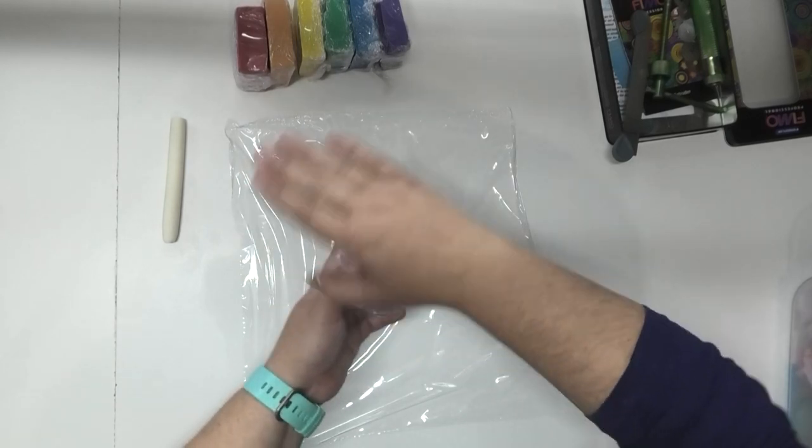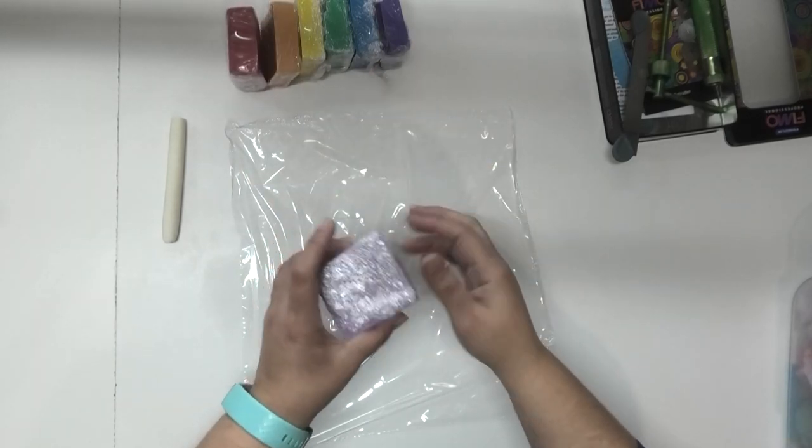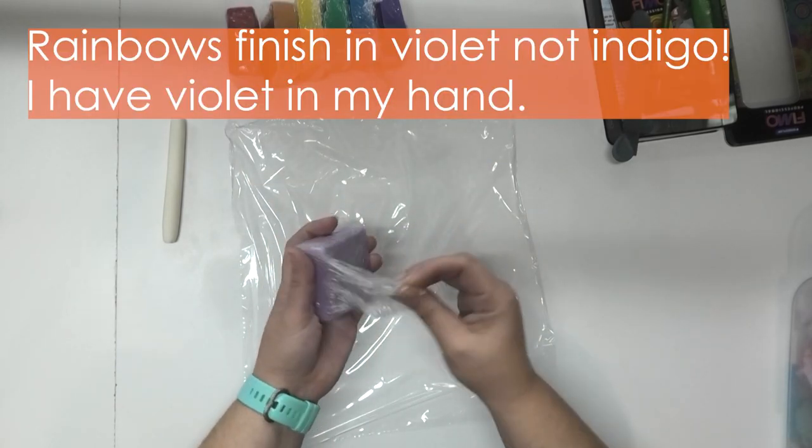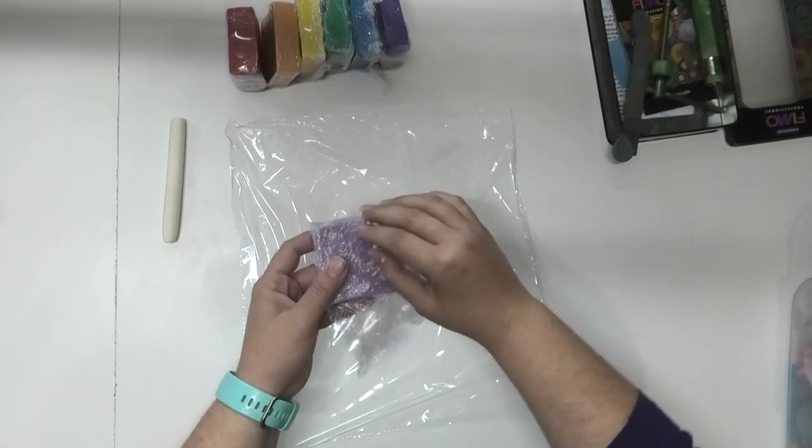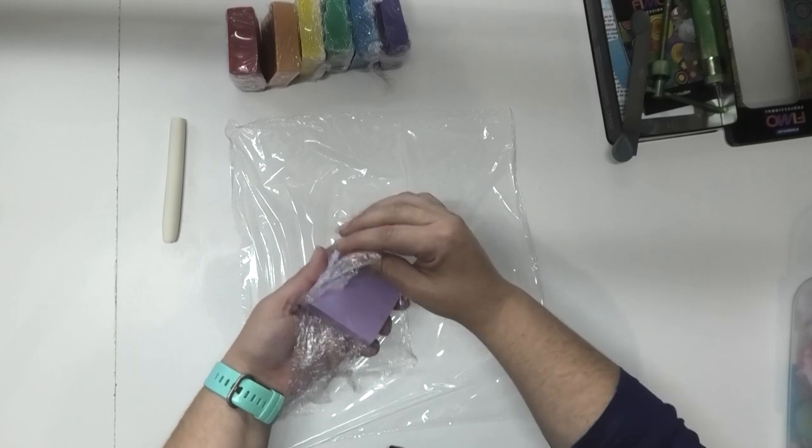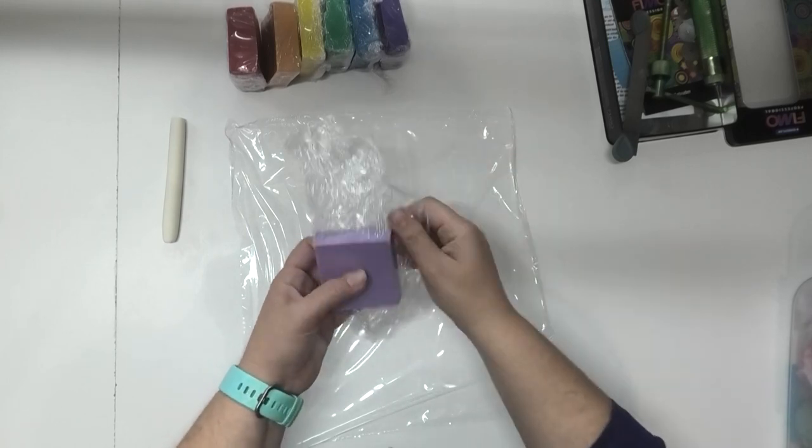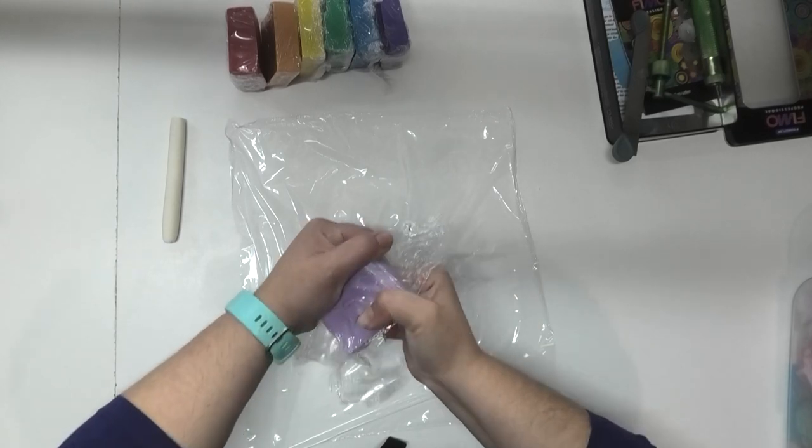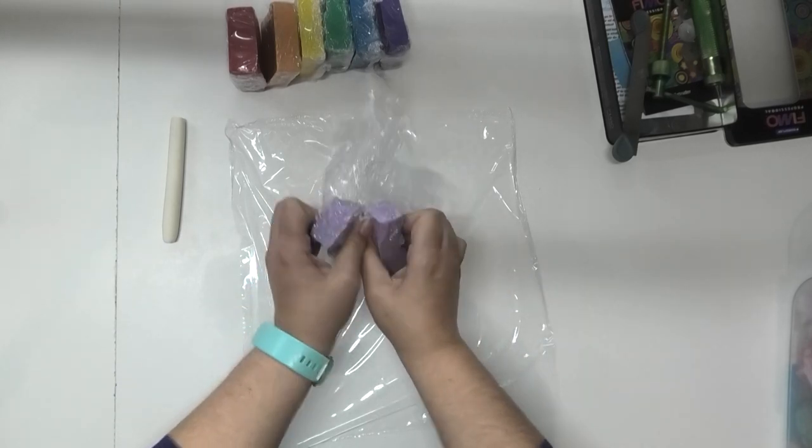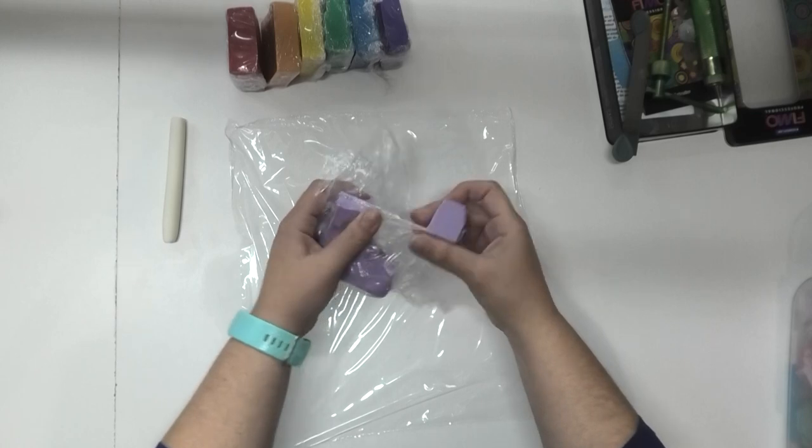Looking at a rainbow, we always have red on the outside and it comes down into indigo. And for the first time ever I am actually going to put both purples into my rainbow, so the indigo and the violet. Usually if I do a layer of soap I only put the one purple because it's just that little bit easier. But this time around, let's go for that extra purple.